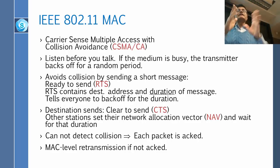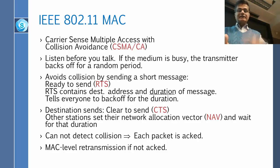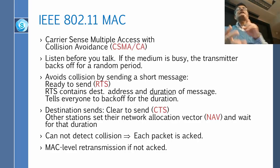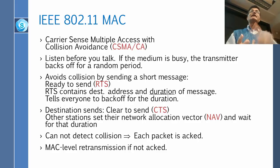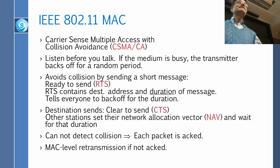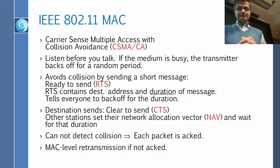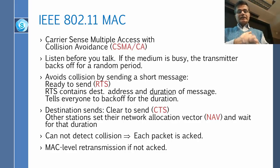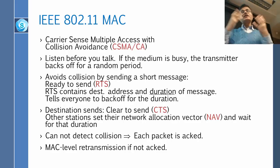Every packet actually has the remaining time. In the RTS, it includes the time of the RTS, CTS, packet, and ACK. In the CTS, it has the time of the CTS, packet, and ACK. In the data packet, there's the time of the packet and ACK. In the ACK, it says 'I am done.' So the remaining time is present in every packet. Because you cannot detect collision, each packet is acknowledged at the MAC level, and if you don't get the ACK, you retransmit from there.